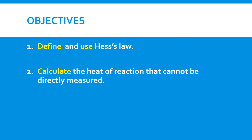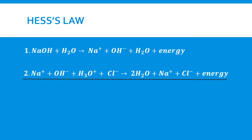When we talk about heat of reaction we're referring to enthalpy change — that is the energy change that accompanies a chemical reaction. It is hard to measure the enthalpy change for a reaction that occurs too slowly or for a reaction that may be the intermediate step in a series of reactions. So we can use thermochemical equations to indirectly determine energy changes that occur in a chemical process or in chemical reactions.